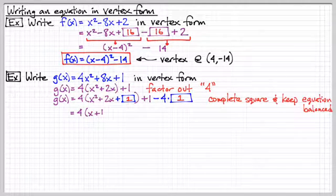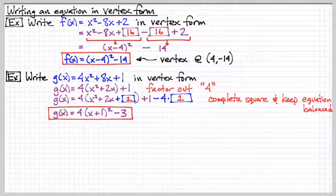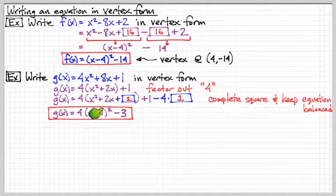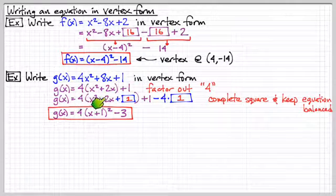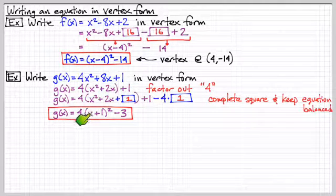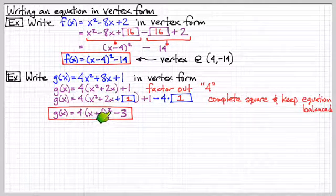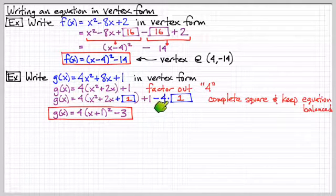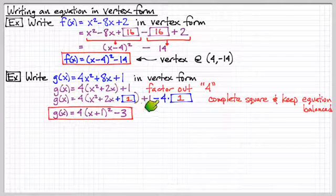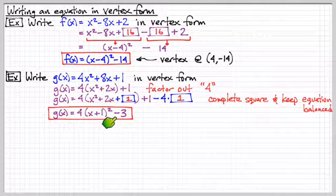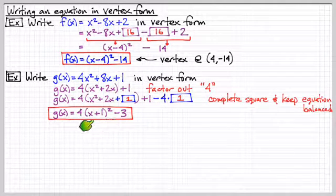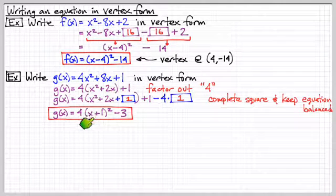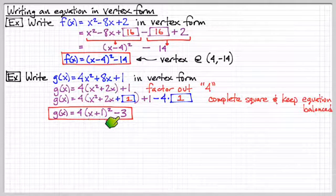And then now I just turn this trinomial into the perfect square, x plus one squared. And then I add up one plus four, or sorry, one minus four, that's minus three. And so again, I can see I have vertex form. My vertex is at negative one, negative three. So that's the lesson for today.